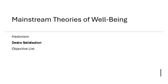Let's keep in mind that desire satisfaction is one of three mainstream theories of well-being. Hedonism, we've already seen. Desire satisfaction is the one we're going to take a look at here, and objective list views are the third major view that we're going to close out the unit looking at.